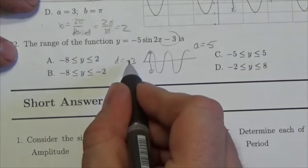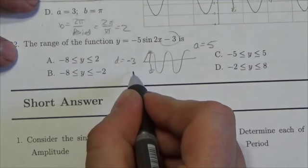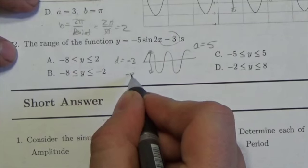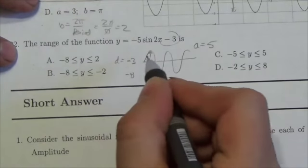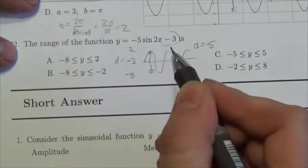So, starting at negative 3, I'm going to go down 5. Well, 5 down from negative 3 is going to be negative 8. And then I'll go up 5. So, negative 3 plus 5 is going to put me at 2.